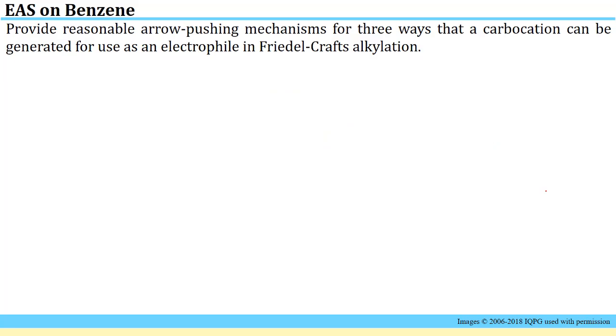Our next problem is to provide reasonable arrow pushing mechanisms for the three ways that a carbocation can be generated for use as an electrophile in Friedel-Crafts alkylation reaction. There are three ways that we see in the primer in lesson 4.7 where the Friedel-Crafts alkylation is first introduced. We think about these one at a time.